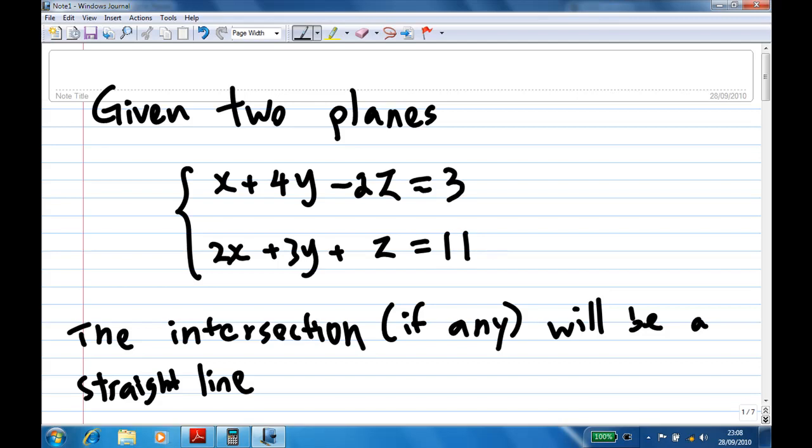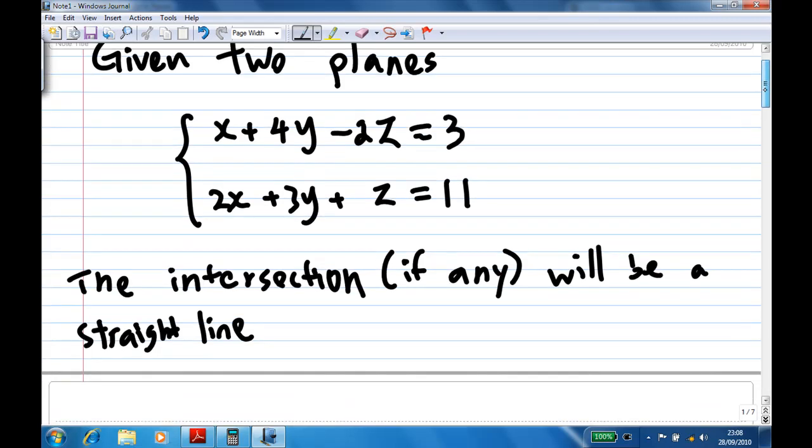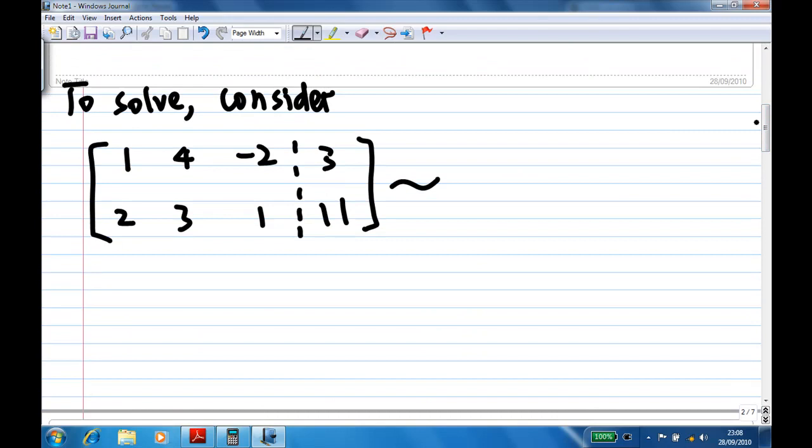The intersection, if any, will be a straight line in three-dimensional space. When we solve this system of equations, we're actually finding the intersection. So to solve this, we're going to do some row operations. Write down the augmented matrix.